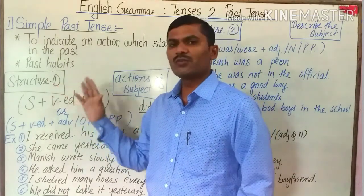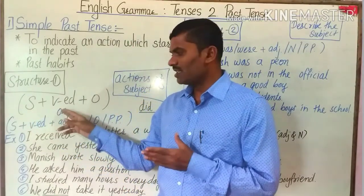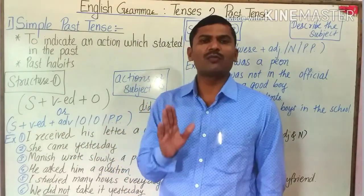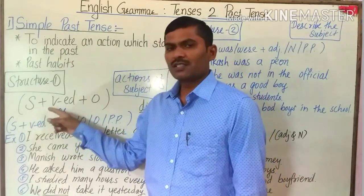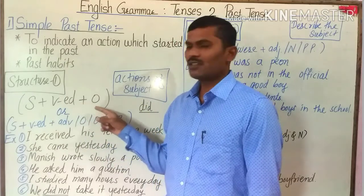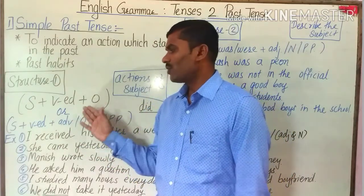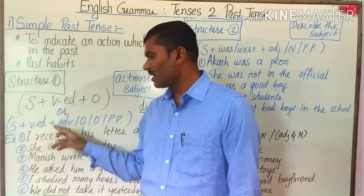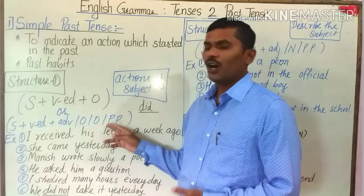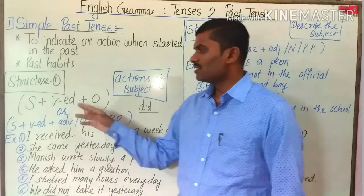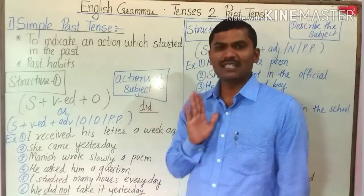Now, the structures to make sentences in simple past tense. Formula number one is subject plus VD, where VD means the past form of the verb, plus object. A modified formula is subject plus VD plus adverb, object, another object, or prepositional phrase. This structure is used to indicate the actions of the subject.